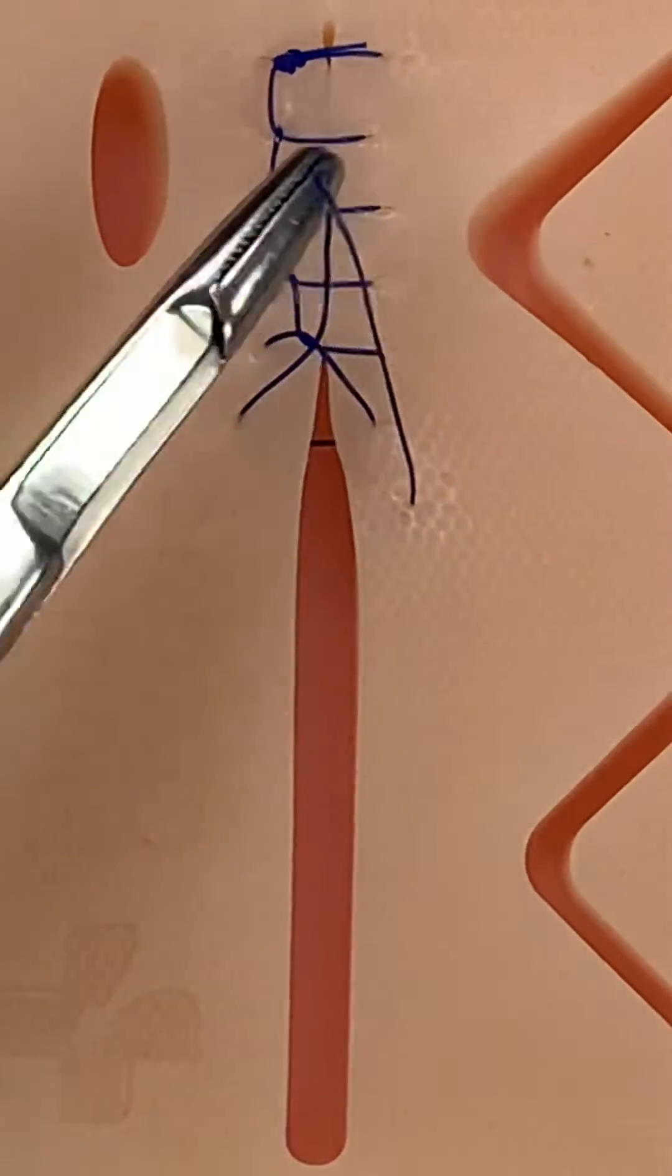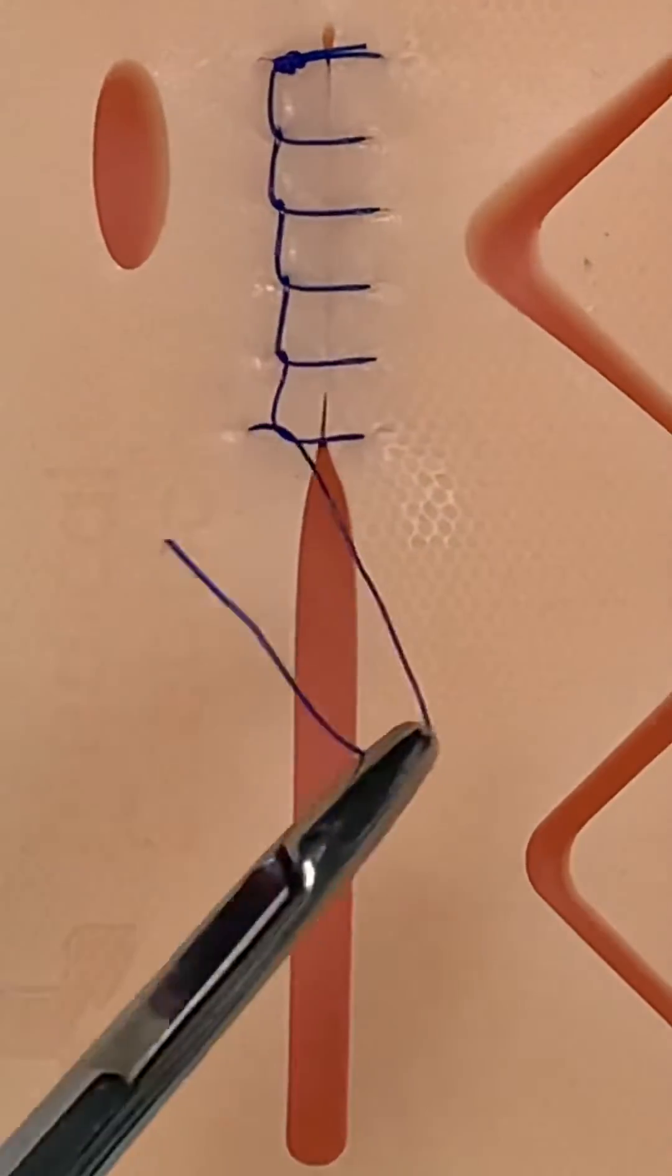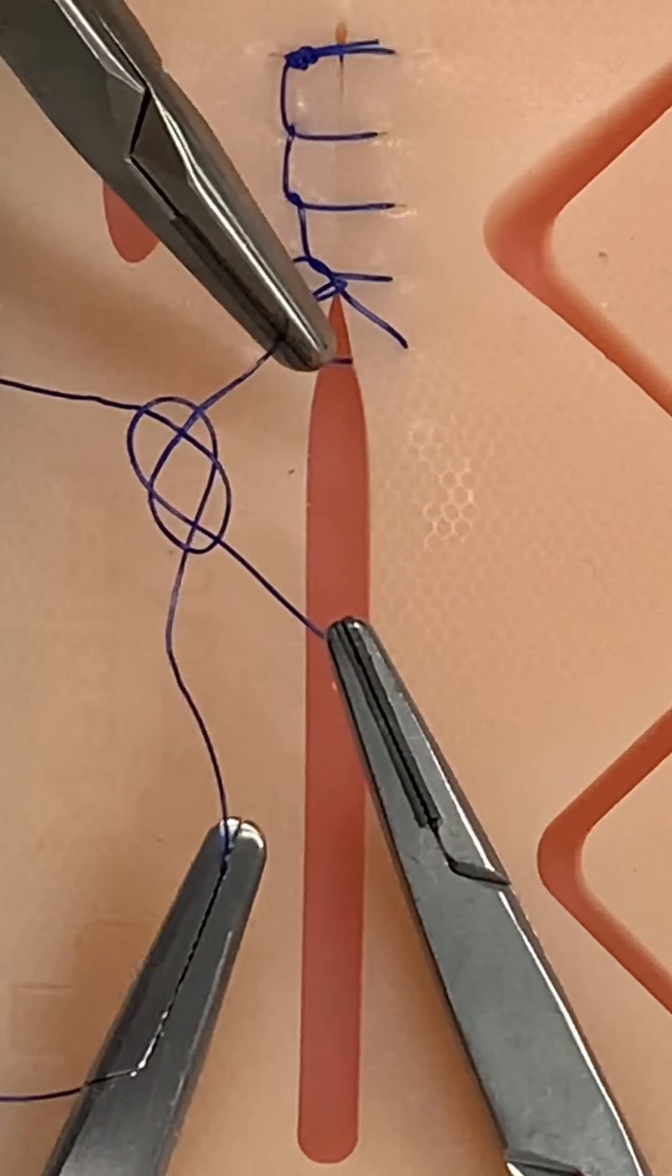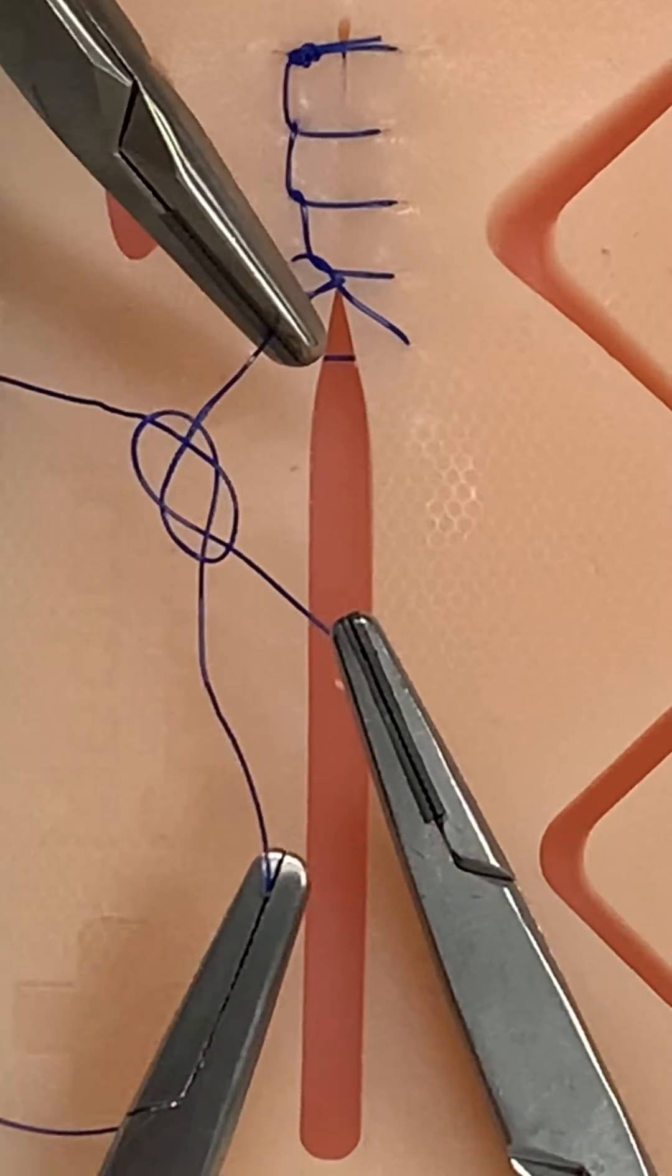But instead of completely unraveling the suture and starting all over again, you can use a bend technique. Bends are knots used to reattach two ends of suture material. The carrick bend, or sailor's knot, is one that's used in eye surgery.